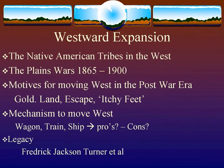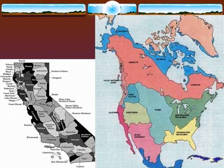We're going to start with a theory, a thesis statement. I'll start macro, then go micro, give you some evidence, and then get the Plains Wars started. Let's start talking about Native Americans west of the Mississippi as we're coming out of the Civil War era, sort of 1865, 1870, 1875.